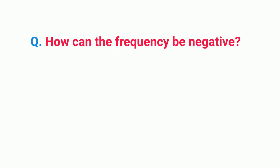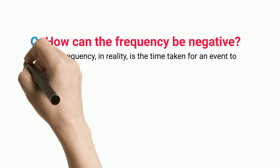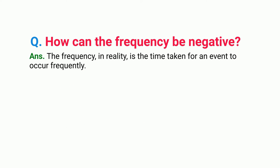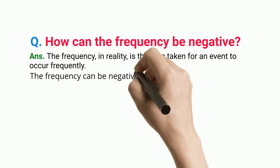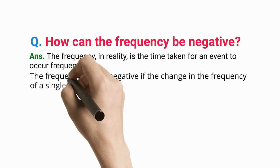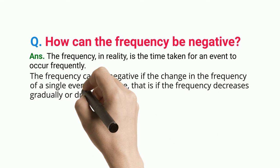The frequency in reality is the time taken for an event to occur frequently. The frequency can be negative if the change in the frequency of a single event is negative - that is, if the frequency decreases gradually or drastically.